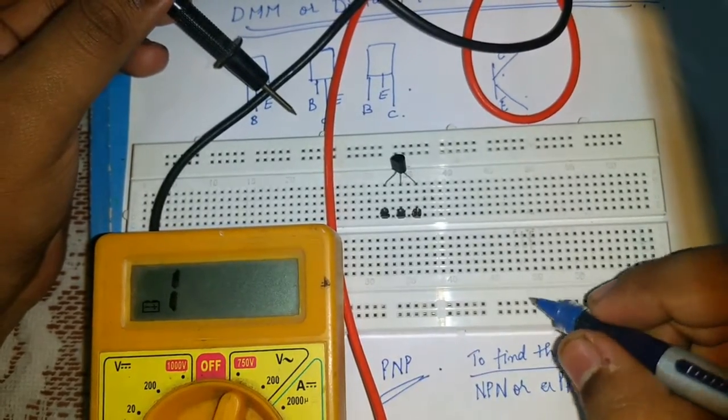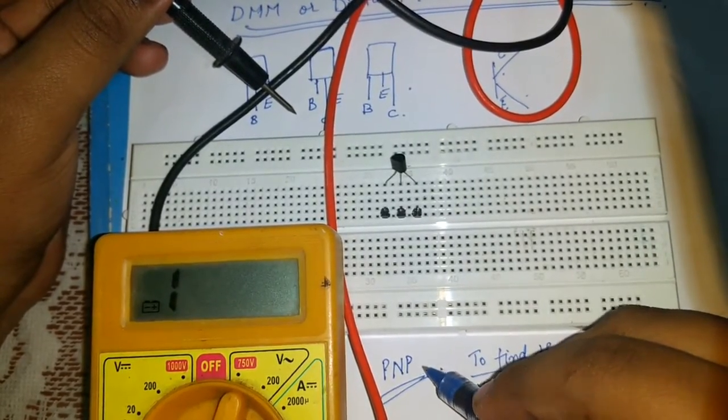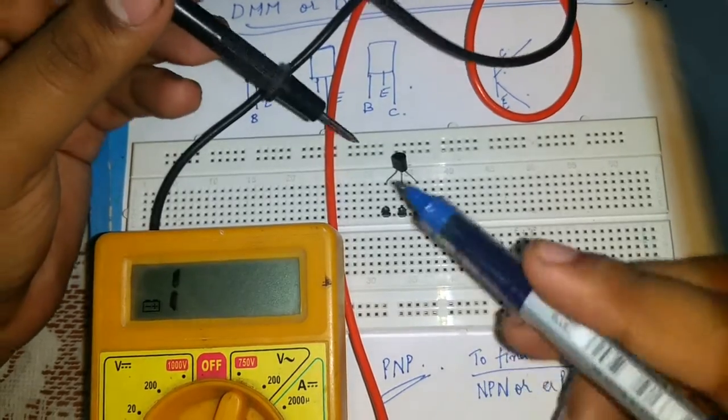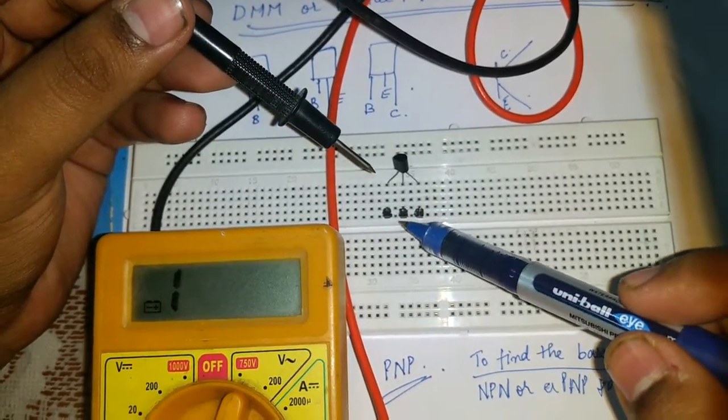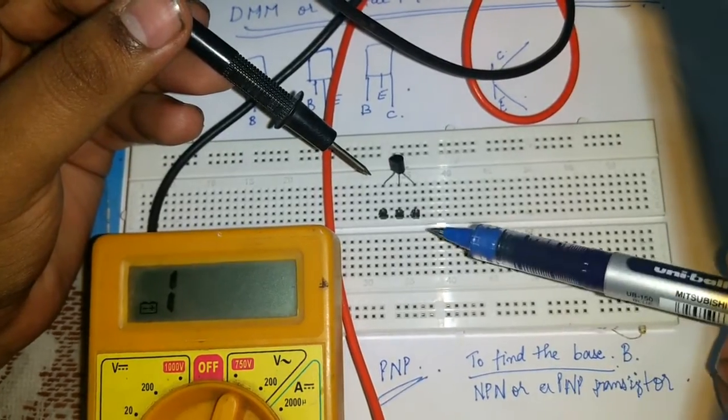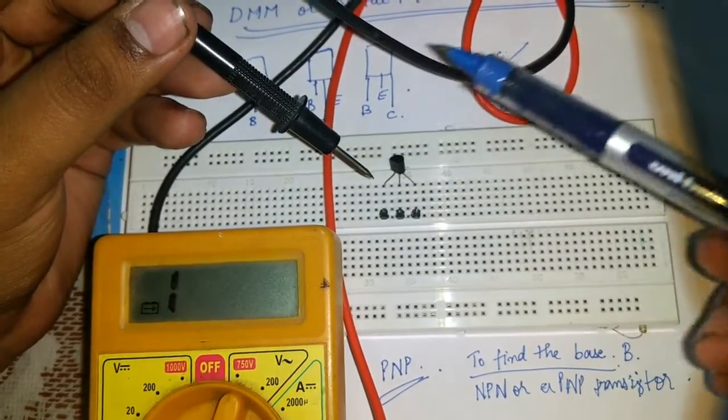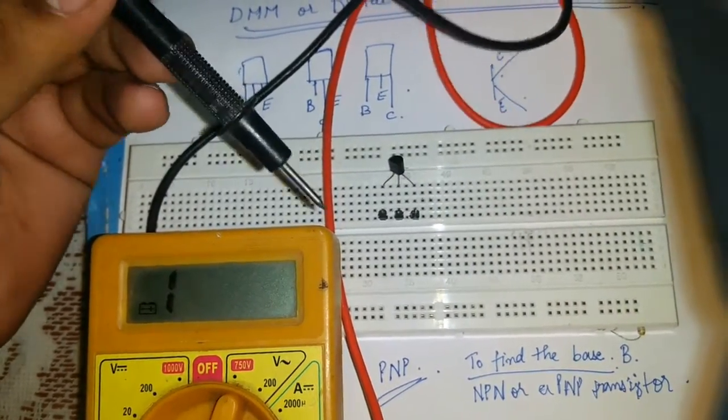That means if I am not getting when keeping the black pin stationary, this is not a PNP transistor. This is how we determine if it's an NPN or a PNP transistor. If we are keeping black pin stationary and we get the both way deflection, then it's a PNP transistor. And let's check with red pin also.